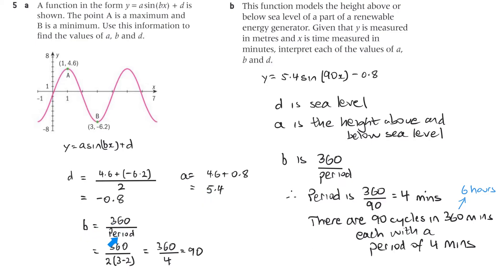b equals 360 divided by the period. The period here: this is half a period, and looking at the x values, 3 minus 1 gives the half-period distance of 2, so the full period is 4. I wrote that as 3 minus 1, and multiplied by 2 to get 4. So b equals 360 divided by 4, which is 90.